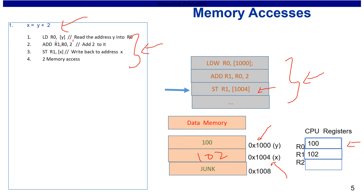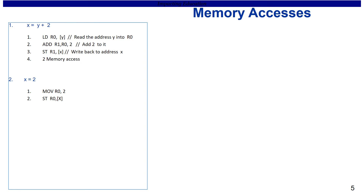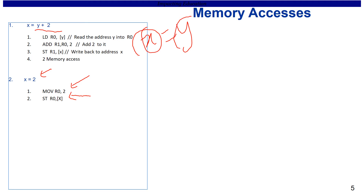So x = y + 2 boils down to three assembly instructions — one C statement can translate to multiple assembly instructions. Similarly, instead of x = y + 2, you can have x = 2, in which case it boils down to two assembly instructions: first moving the value 2 into r0, then writing it to the memory location of x. A variable can be assigned values from multiple sources — a constant, an expression, or another variable.